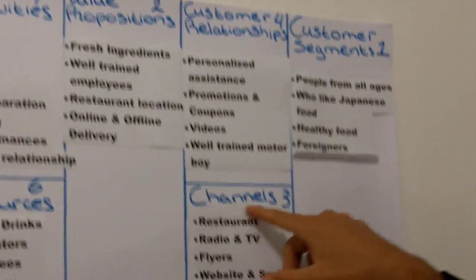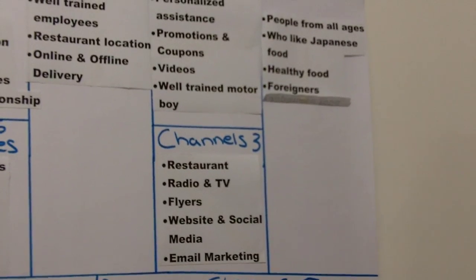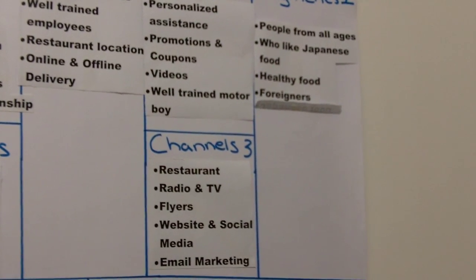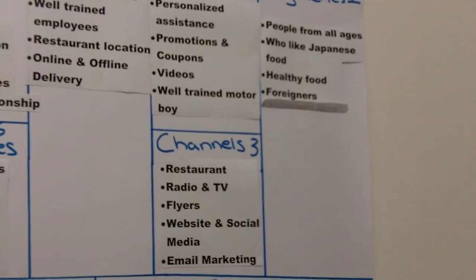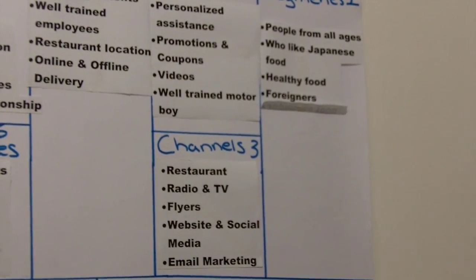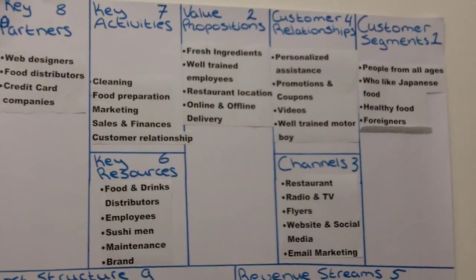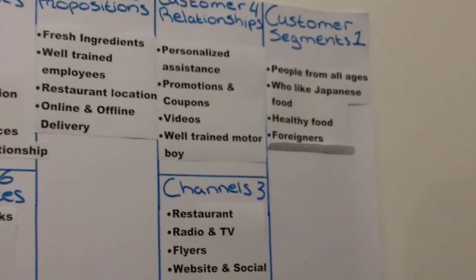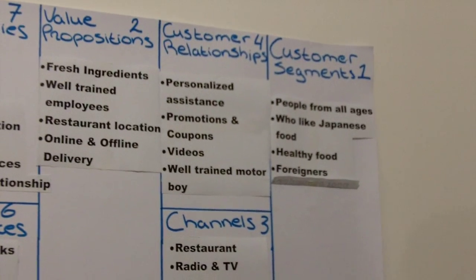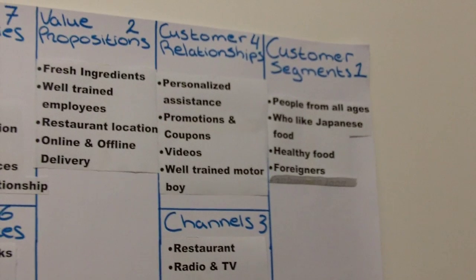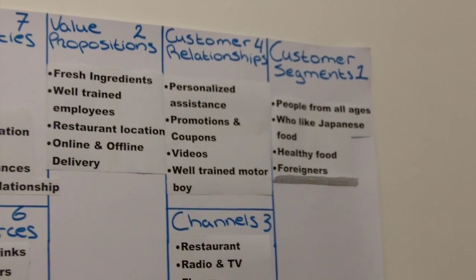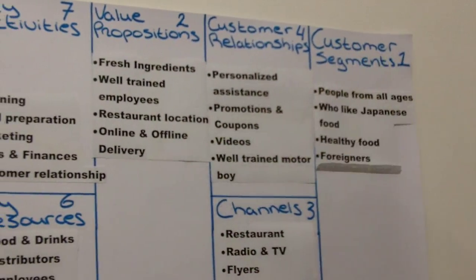The third building block is channels. Through which channels are you going to communicate your message? As you can see, we have that all set up. This example is for a Japanese food restaurant, but whether you want to create a website, a hotel, or anything else, the formula is the same — the nine building blocks are the same. Right after channels, you have customer relationship: what relationship do you need to create with your customer in order for them to come back? Simply offering value is not enough; you must create a relationship.